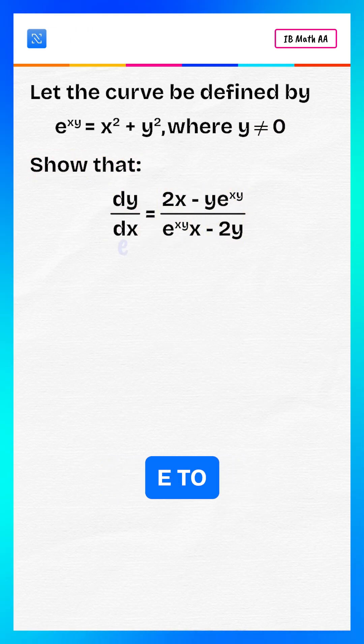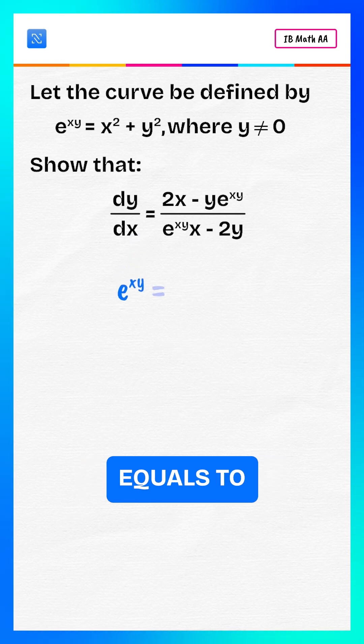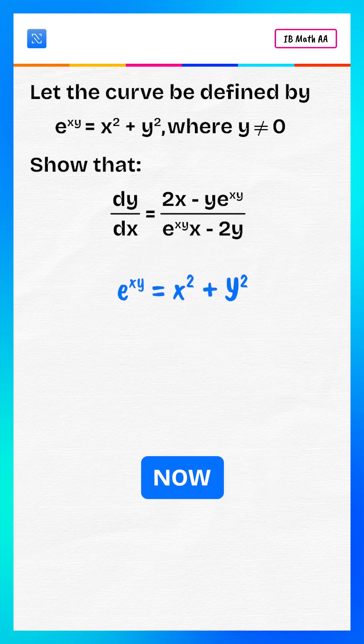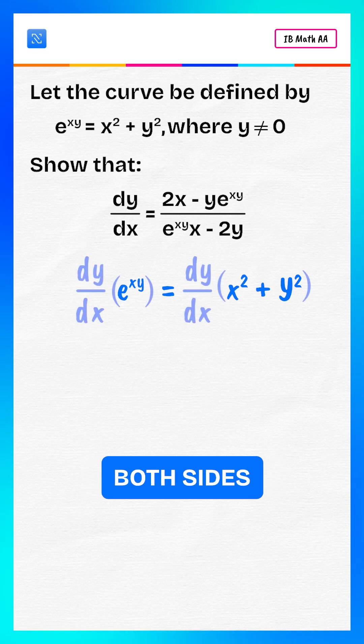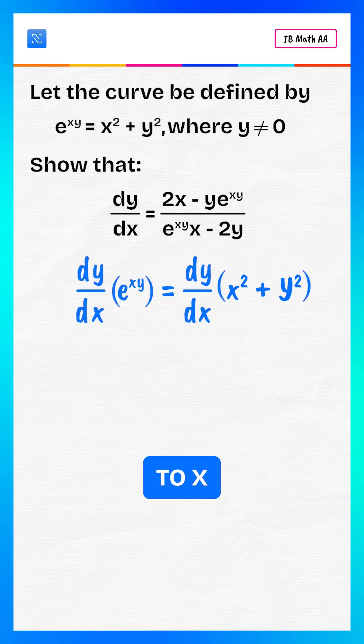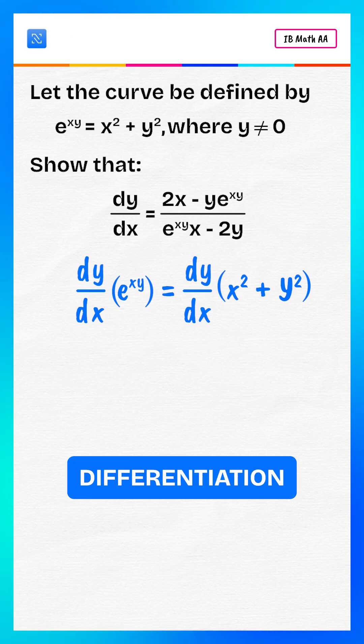We are given e to the power xy equals to x squared plus y squared. We differentiate both sides with respect to x. Since y is a function of x, we use implicit differentiation.